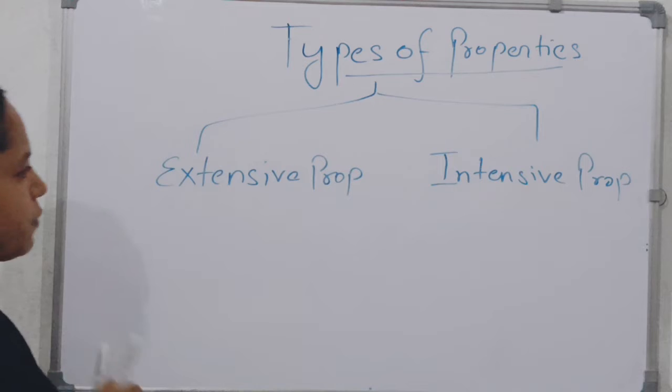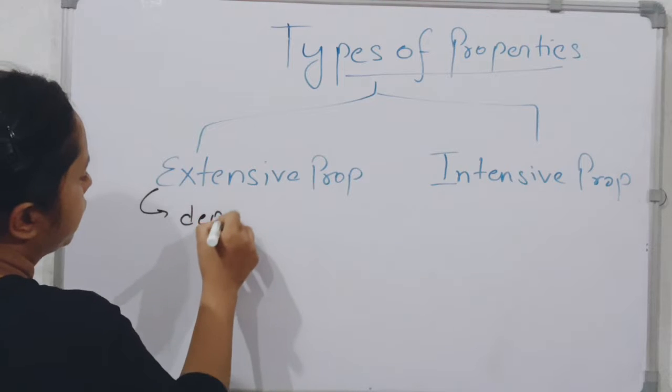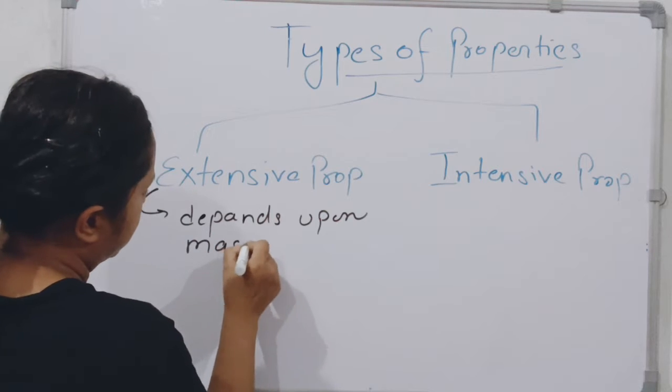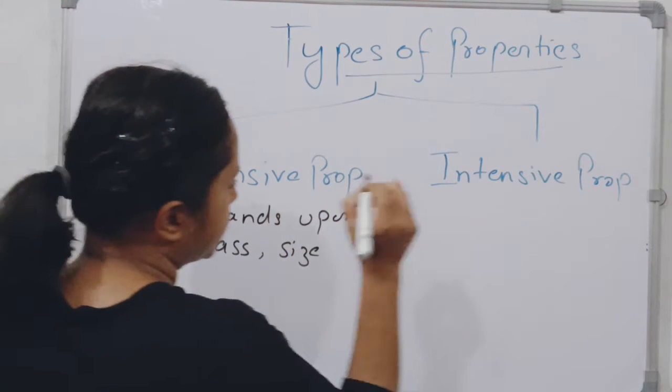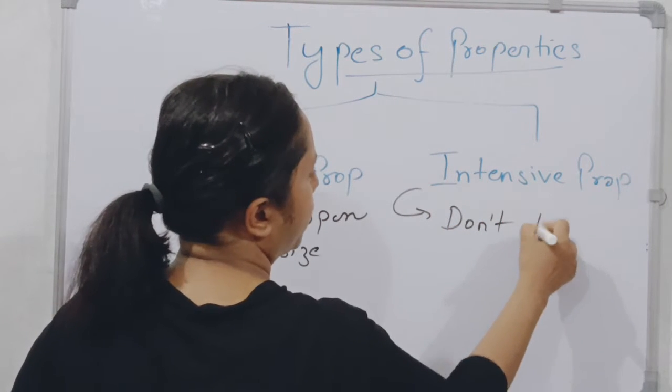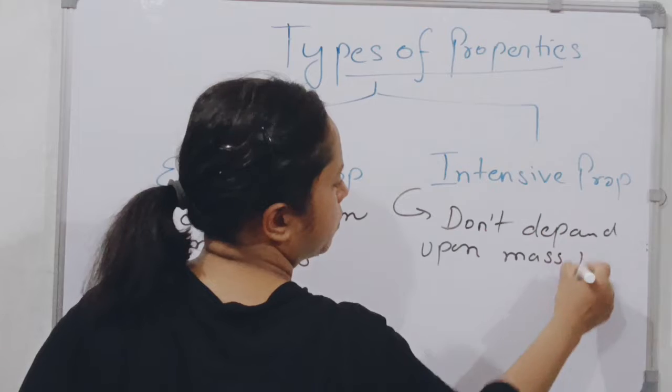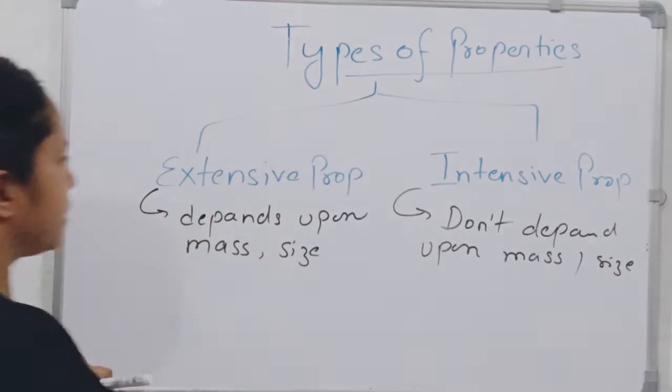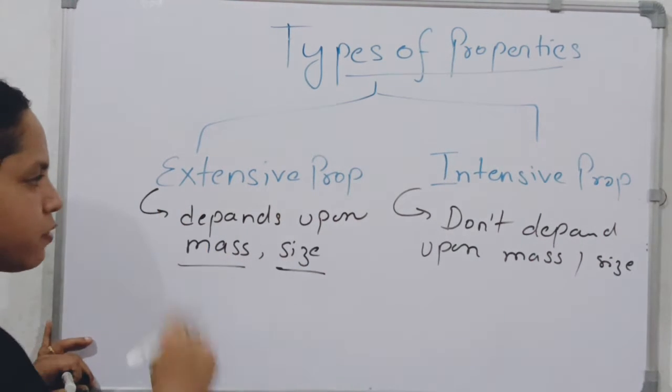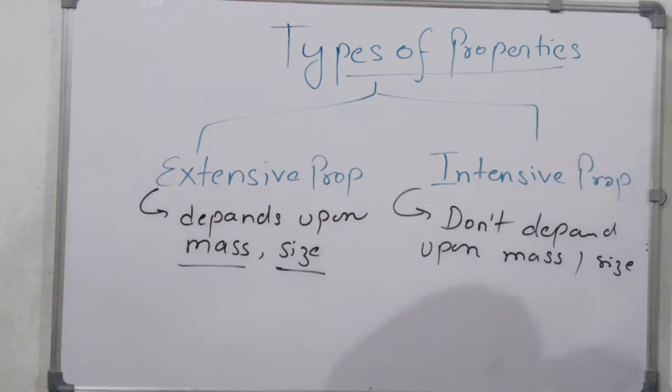What is extensive property? Extensive property is which depends upon mass and size. Intensive property doesn't depend upon mass and size. Extensive property depends on mass and size, while intensive property does not depend on the mass or size.